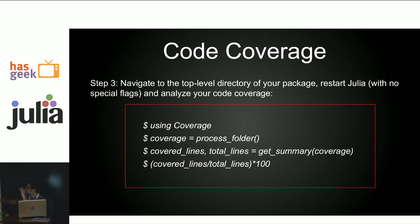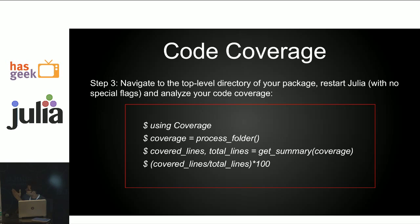Once you're in the directory, you can call the function process_folder. What this function does is: when you run your test program in coverage mode, Julia creates .cov files for every .jl file that actually ran in your test. This function accesses those .cov files and stores the entire summary inside a variable — we've named it 'coverage'. From this, we extract the number of lines covered and the total number of lines, and take a percentage to get your code coverage.